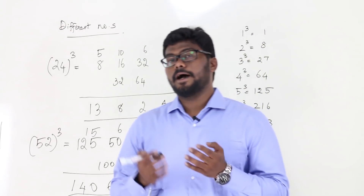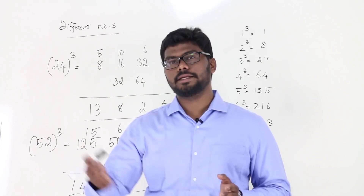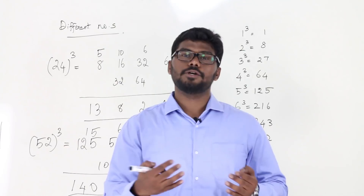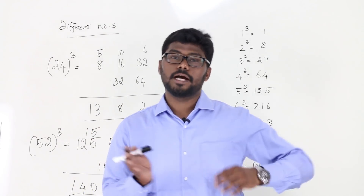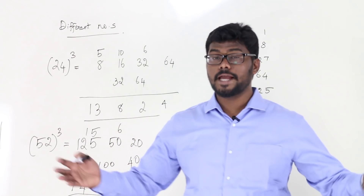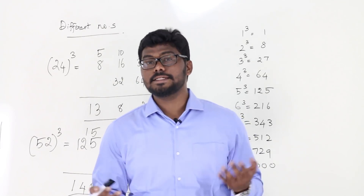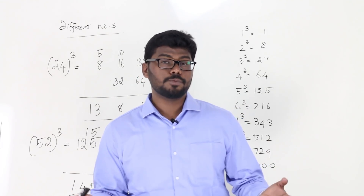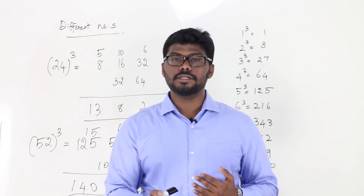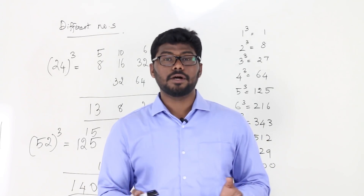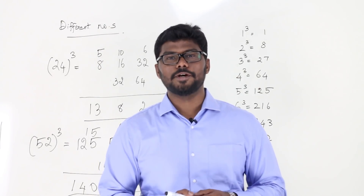I hope calculating cubes faster from number 1 to 99 is now easy. I've categorized every number into four types: Type 1 starting with 1, Type 2 ending with 1, Type 3 same numbers, and Type 4 all other numbers. Whatever number you ask, I can easily solve it. I'm sure you will also get that confidence when you practice using the four shortcuts I've taught you. All the best — see you in the next video.